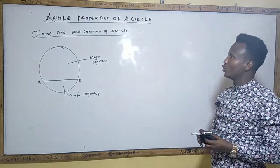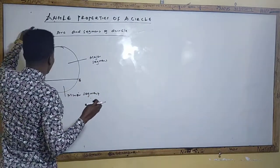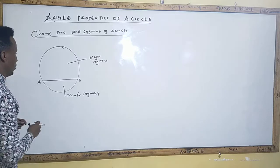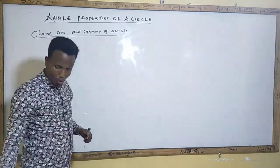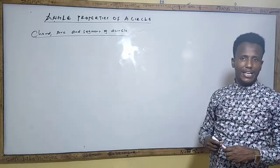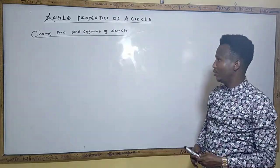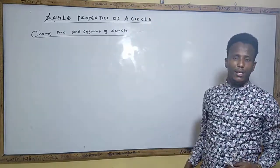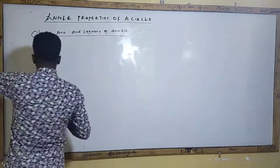Now we'll proceed and see how questions are framed from a circle related to angles. When dealing with angle questions, you must know the reason why you are getting each angle — the reason must be written in brackets. In KCSE, we give reasons. Sometimes you'll be told: find the value of angles, giving reasons.